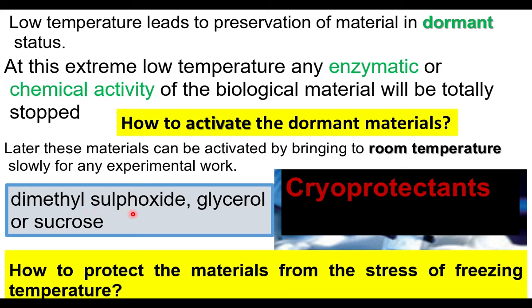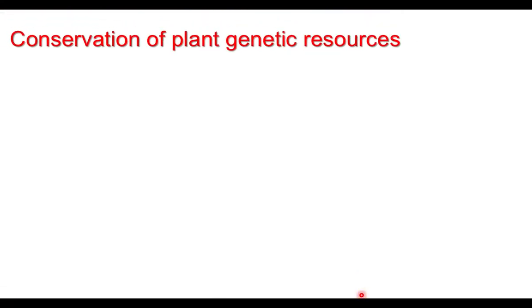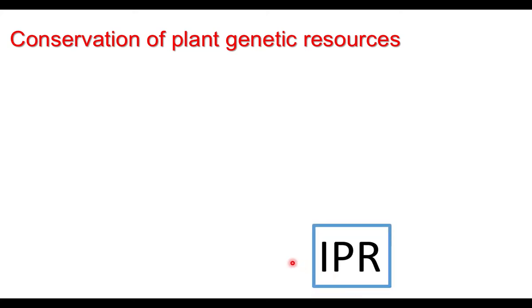Dimethyl sulfoxide, glycerol, and sucrose are the cryoprotectants. These cryoprotectants protect the plant material from the stress of freezing low temperature. In this part we have learned the conservation of plant genetic resources. In the next part we are going to learn about IPR — Intellectual Property Rights — and patents.